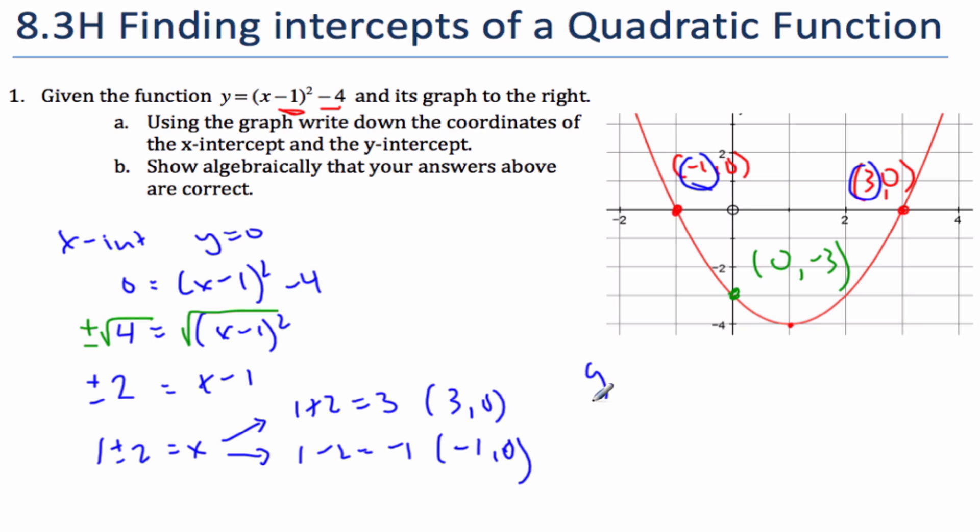For my y-intercept, I do something similar. I force x to be 0, because x is always 0 for y-intercepts. And so if I plug 0 - 1 squared minus 4, I get 1 minus 4 equals negative 3. And so I get (0, -3) as my y-intercept, which was here indeed.